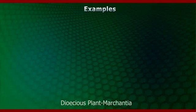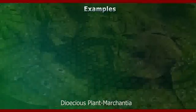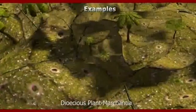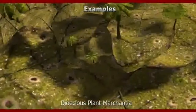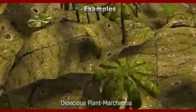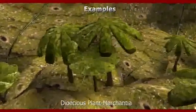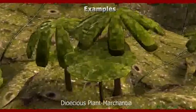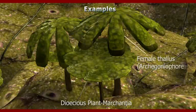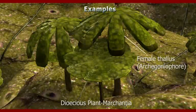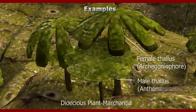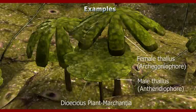And for dioecious plants, for example Marchantia, in dioecious plants there are different male and female plant bodies. The female plant body is called Archegoniophore and the male thallus is called Antheridiophore.